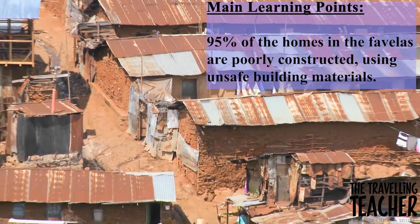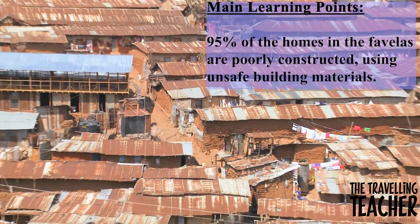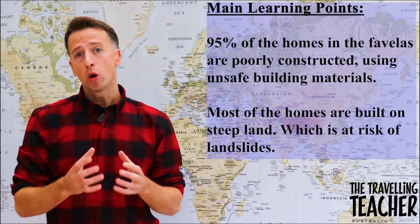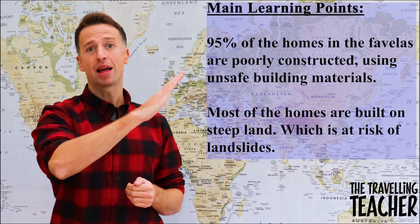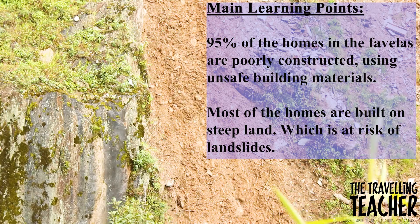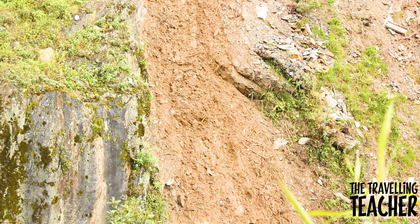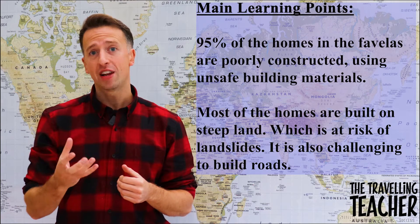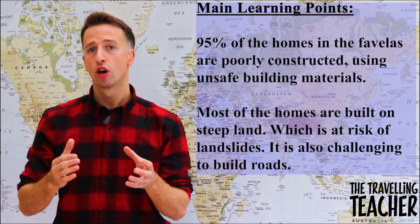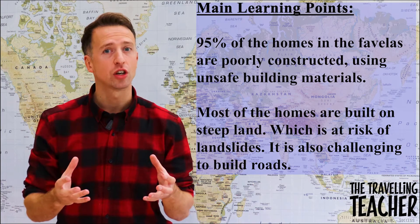The first challenge is the construction of homes, many of which are poorly built and unsafe to live in. Around 95% of the homes within the favelas are poorly constructed using unsafe building materials. Most of the homes are built on unsafe, steep land which is consistently at risk of landslides, especially after periods of heavy rainfall. In addition, due to the steepness of the land, it is very challenging to build sustainable roads throughout the favelas, which could lead to further problems.